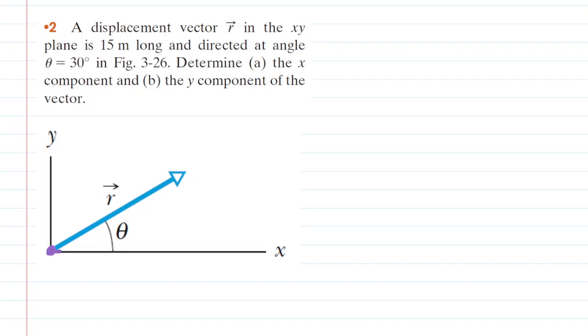Draw a line horizontally to the right. This represents the x component, which we can call r sub x. Then draw another line that goes straight up from the tip of that previous vector. This component will be r sub y.